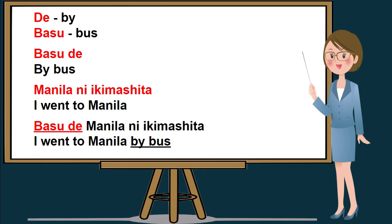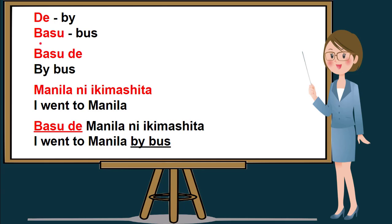For our example, de is by in English, basu is bus in English. If we will combine them together, it will be basu de, or in English, by bus.